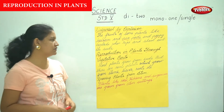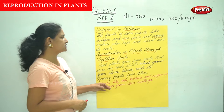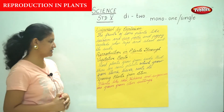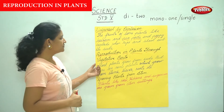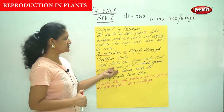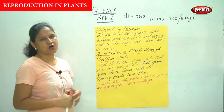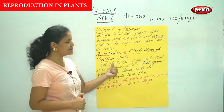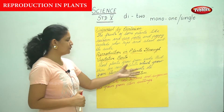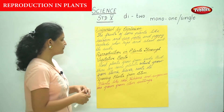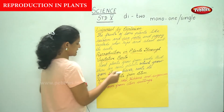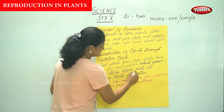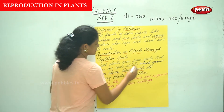We are going to talk about reproduction in plants through their vegetative parts. Most plants grow from seeds, but there are some plants which grow from stems, leaves, roots, etc.